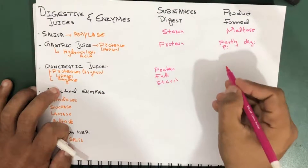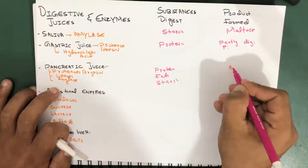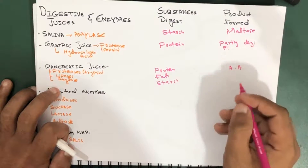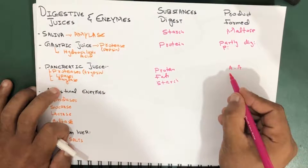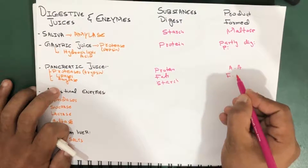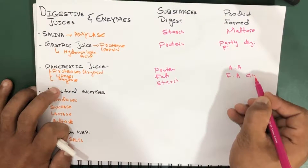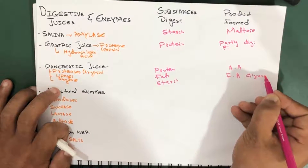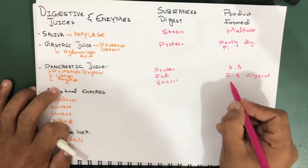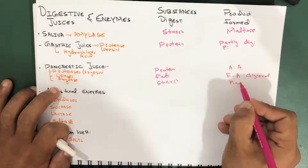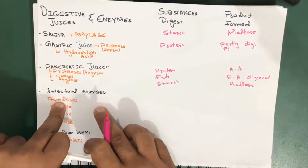So the proteins are going to be converted into amino acids. The fats are going to be converted into fatty acids and glycerol, which is an alcohol. And the starch is again going to be converted into maltose.